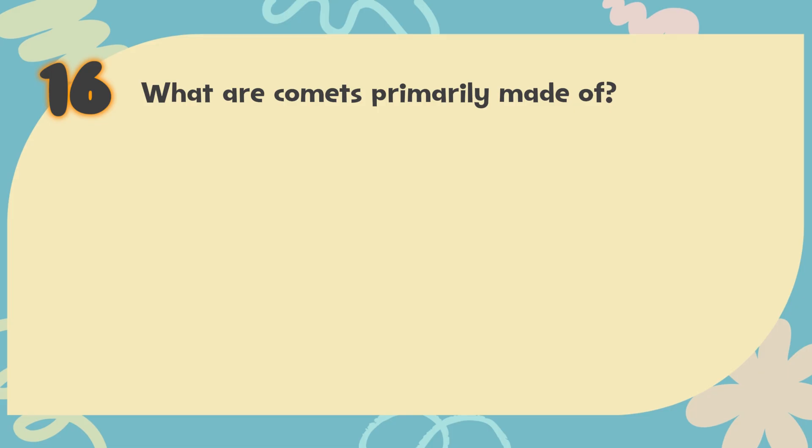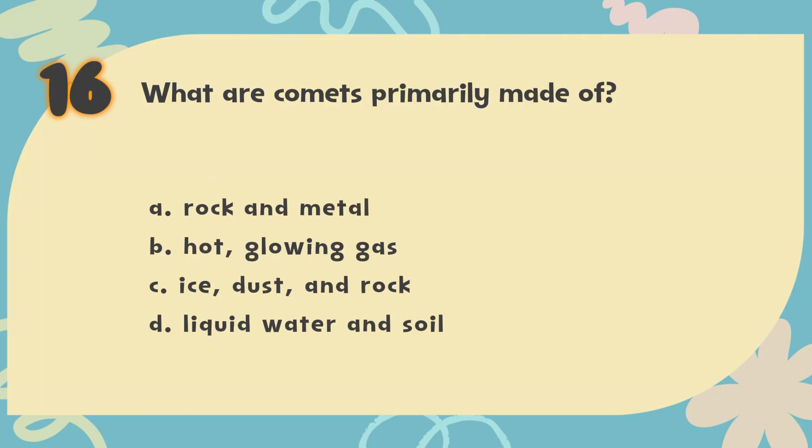Number 16. What are comets primarily made of? The choices are: A. Rock and metal. B. Hot, glowing gas. C. Ice, dust, and rock. D. Liquid water and soil.